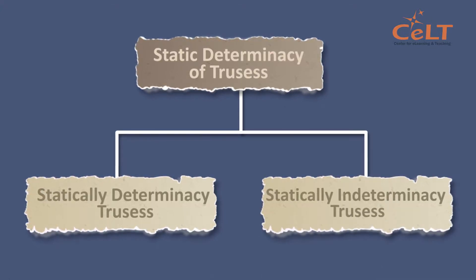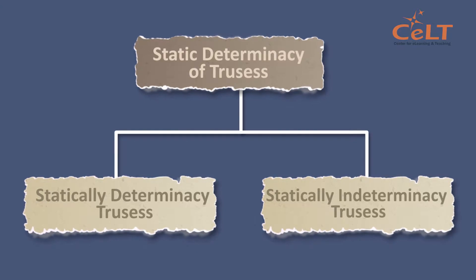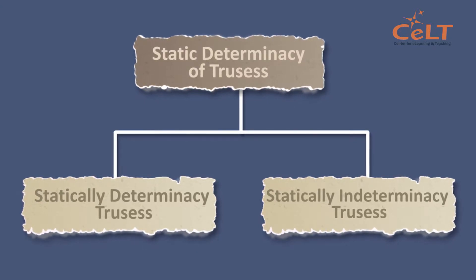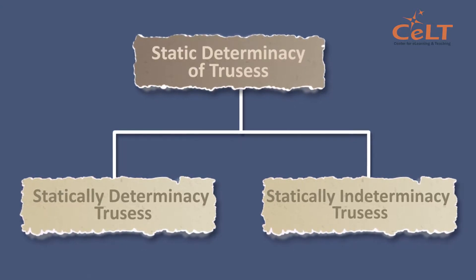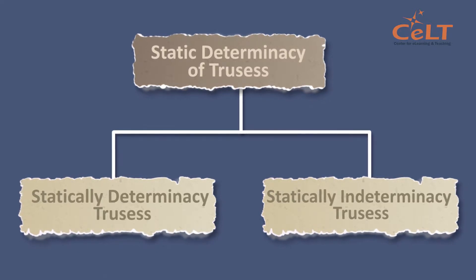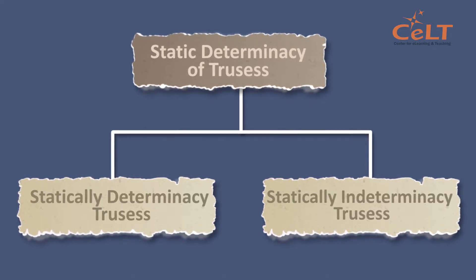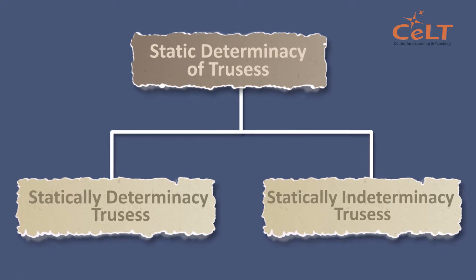A truss is considered statically indeterminate when the static equilibrium equations are not sufficient to find the reactions on the structure. There are simply too many unknowns.